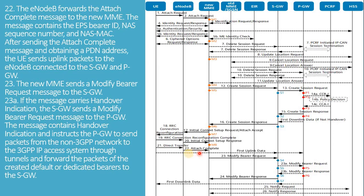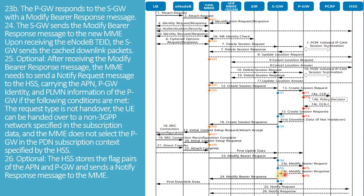The E-NodeB forwards the attach complete message to the new MME. The message contains the EPS bearer ID, NAS sequence number, and NAS MAC. After sending the attach complete message and obtaining a PDN address, the UE sends uplink packets to the E-NodeB connected to the SGW and PGW. The new MME sends a modify bearer request message to the SGW. If the message carries handover indication, the SGW sends a modify bearer request to the PGW, instructing the PGW to send packets from the non-3GPP network to the 3GPP access system through tunnels, and forward the packets of the created default or dedicated bearers to the SGW. The PGW responds with a modify bearer response message.